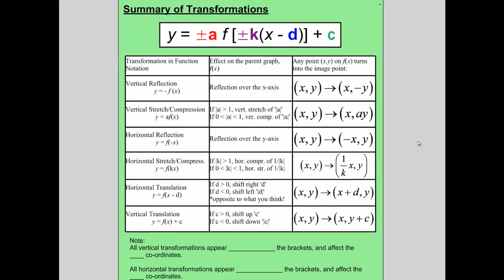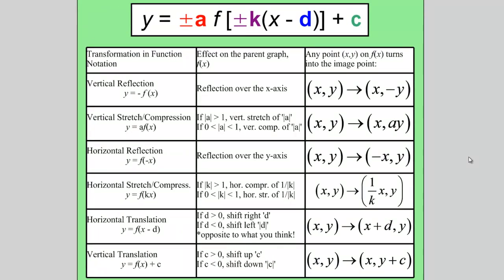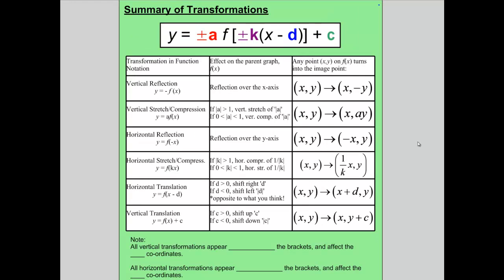Here is a summary of all the different transformations we've seen. You can pause the video and write these out in your own notes. All vertical transformations always appear outside the brackets of the function notation and affect the y-coordinates. All horizontal transformations always appear inside the brackets of the function notation and affect the x-coordinates.